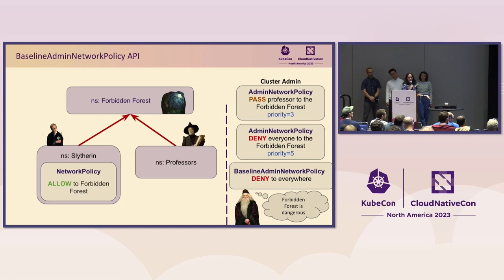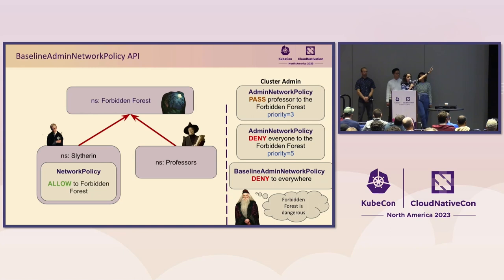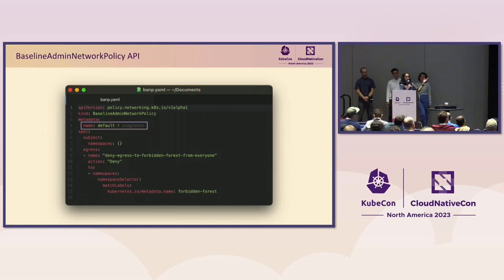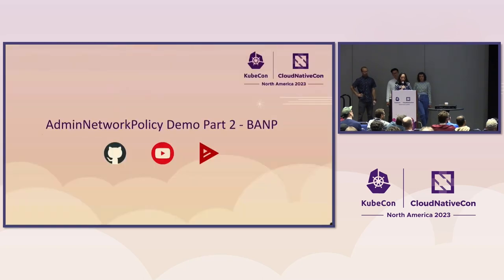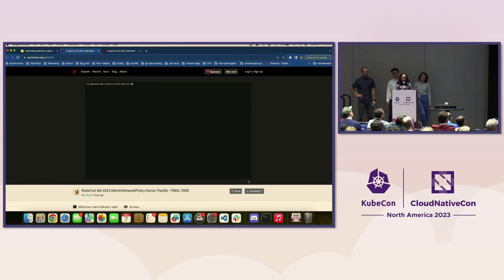What if the professor's namespace has no network policies present? That's when the Baseline Admin Network Policy — fondly known as BANP — kicks in. Now we deny all egress traffic from everyone to the Forbidden Forest based on BANP. The pass action admin network policy at priority three is still being hit and passing — it's just that there's nothing on the network policy layer, so you fall down to the BANP. A sample BANP YAML: it's a singleton resource so you can only have one BANP in your cluster. In the subjects section we select all namespaces and deny egress traffic to the Forbidden Forest.